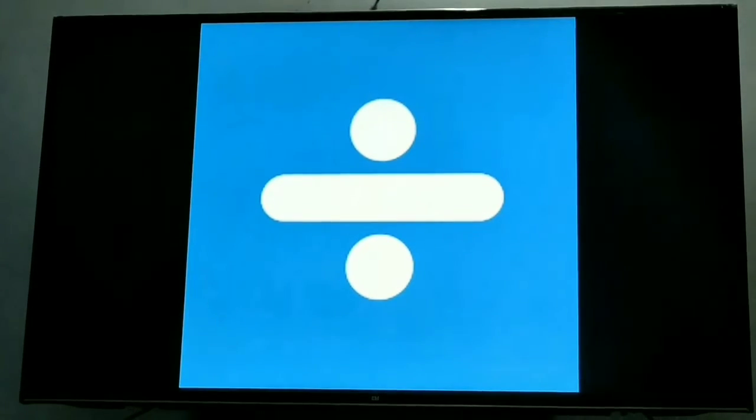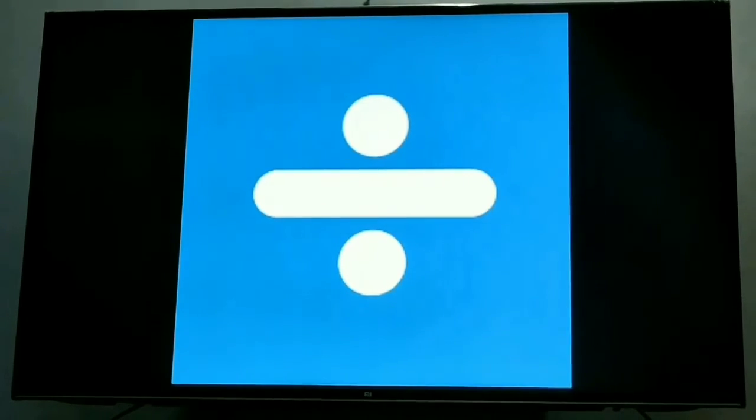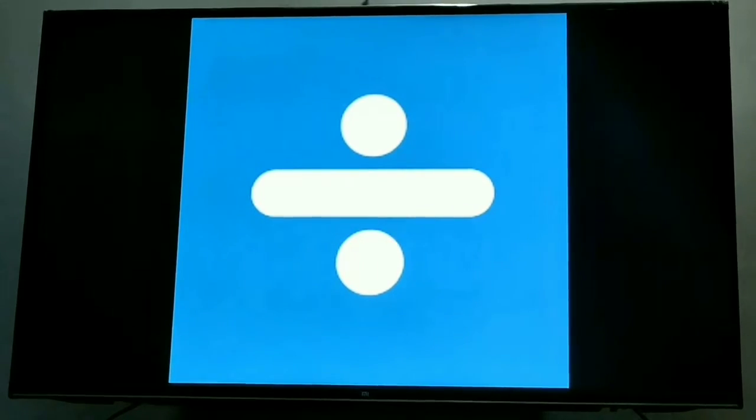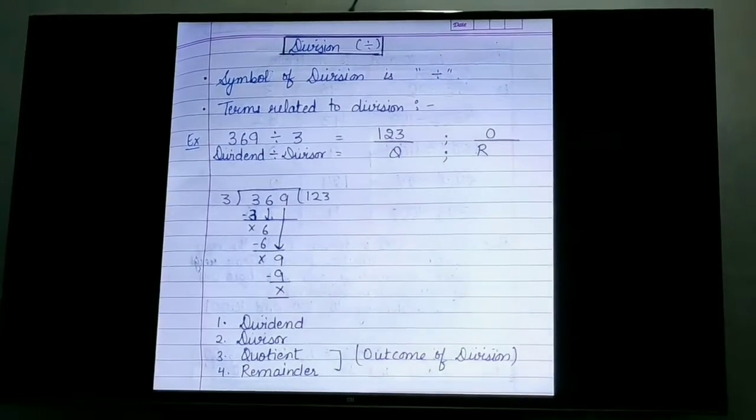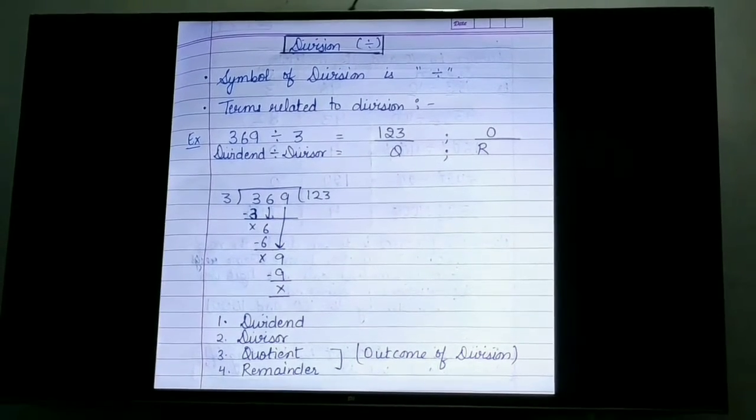The symbol of division is a sleeping line with two dots. One dot at the top of it and second at the bottom. Now the next point is terms related to division.